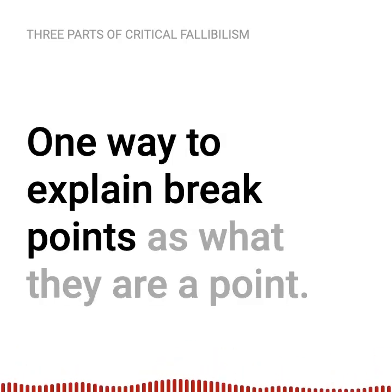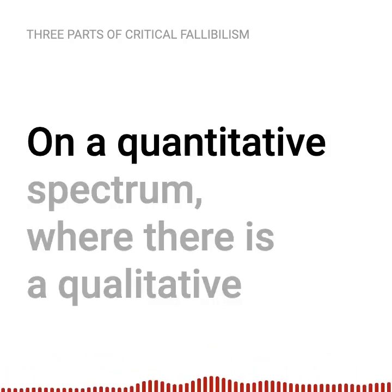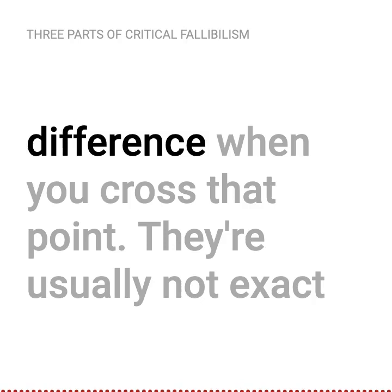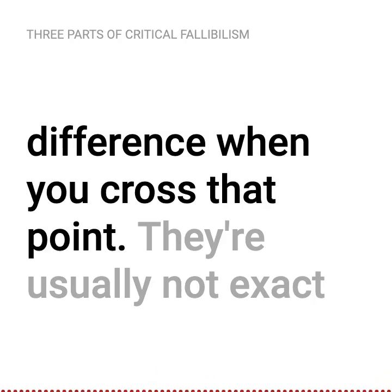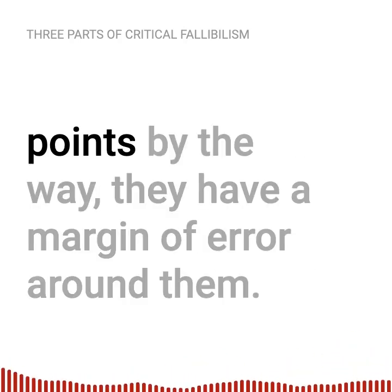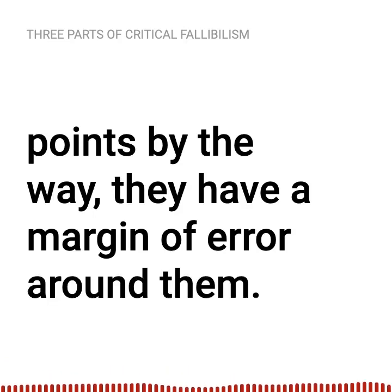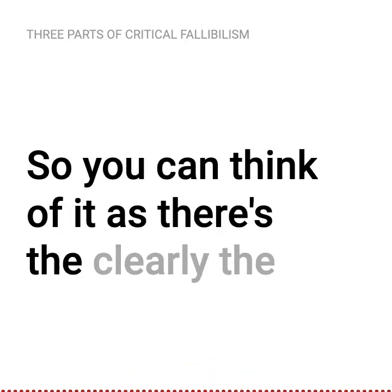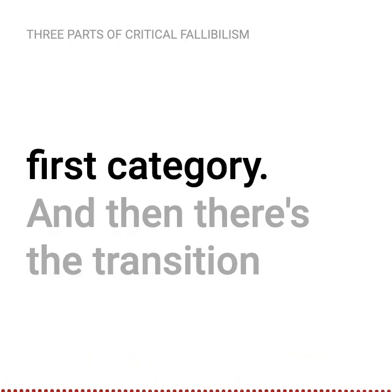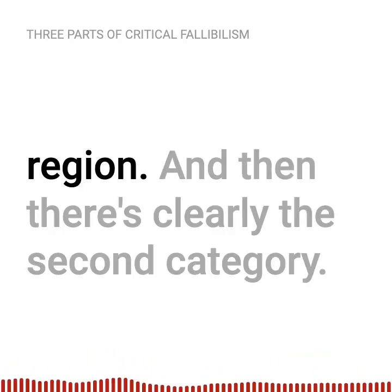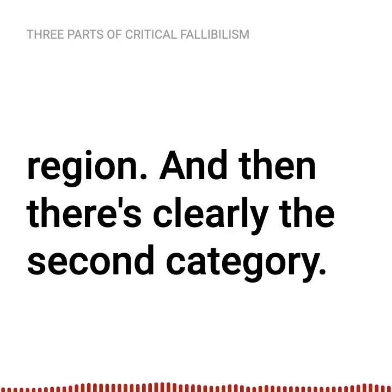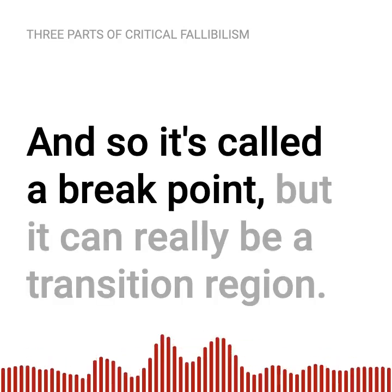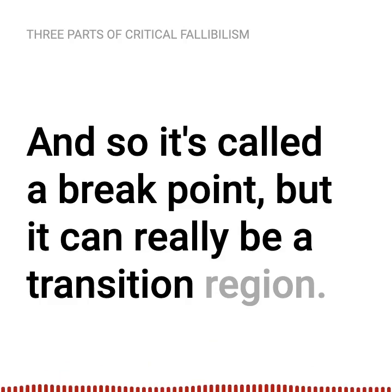One way to explain breakpoints is that they're a point on a quantitative spectrum where there is a qualitative difference when you cross that point. They're usually not exact points — they have a margin of error around them. You can think of it as: there's clearly the first category, then there's a transition region, and then there's clearly the second category. So it's called a breakpoint, but it can really be a transition region.